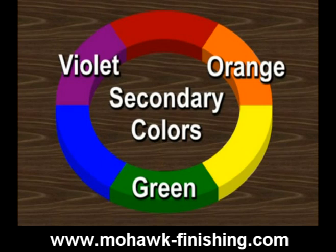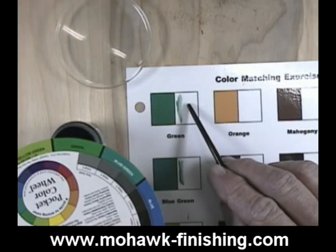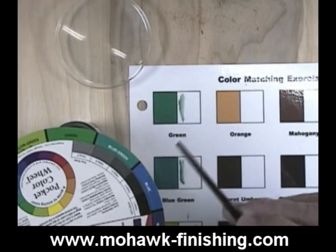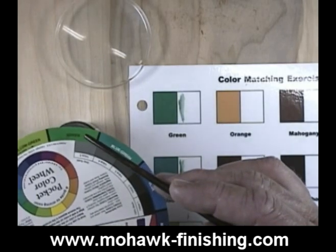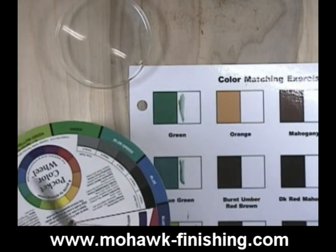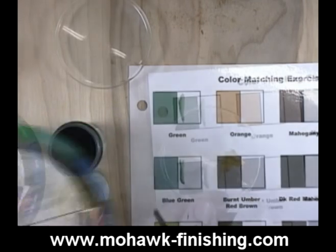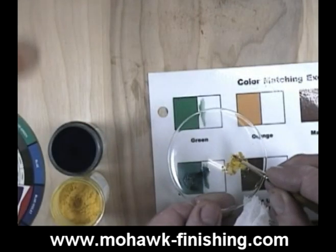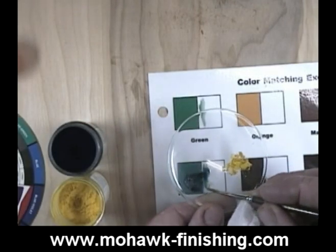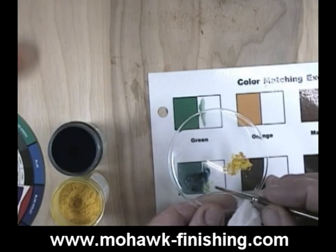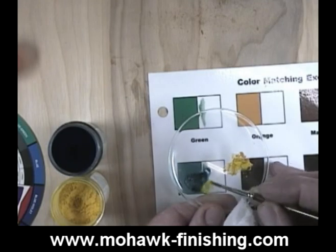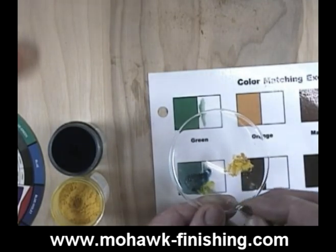Secondary colors are made from mixing theoretical equal amounts of two primary colors. Orange, green, and violet are the three secondary colors. We refer to the equal mixture of the primary colors as theoretical because, in the real world, it's hard to mix exactly equal amounts of any pigments due to intensity differences, weight differences, the amount of pigment versus the amount of solvent in any given colorant, and so on.